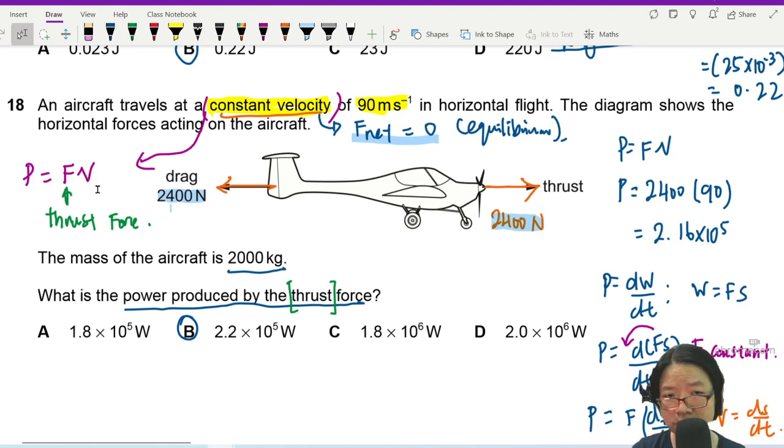In order to find thrust force, I know that thrust force is equal to drag force. Because the net force is zero. Forward force and backward force cancel each other. Then you can maintain constant velocity.